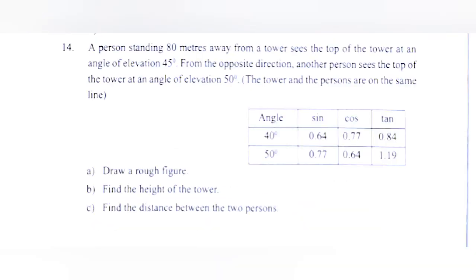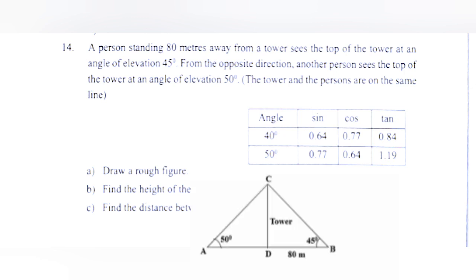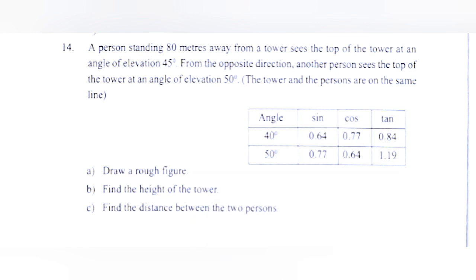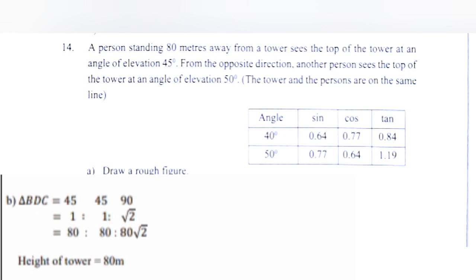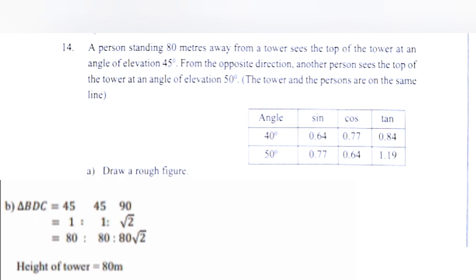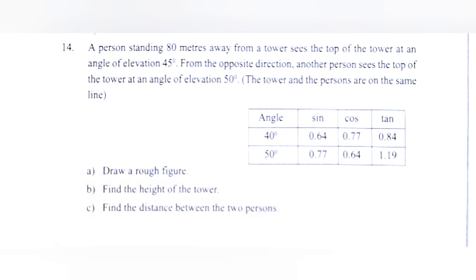Question 14: A person standing 80 meters away from a tower sees the top at an angle of elevation of 45 degrees. From the opposite direction, the angle of elevation is 50 degrees. Draw a rough figure, find the height of the tower and the distance between the two persons. Using triangle BDC with 45-45-90 ratio, the height of the tower equals 80 meters. Wait — the height equals 18 meters.